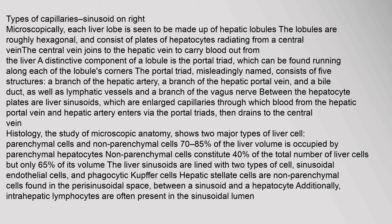Microscopically, each liver lobe is made up of hepatic lobules. The lobules are roughly hexagonal and consist of plates of hepatocytes radiating from a central vein, which joins the hepatic vein to carry blood out from the liver. A distinctive component of a lobule is the portal triad, found running along each of the lobule's corners. The portal triad consists of five structures: a branch of the hepatic artery, a branch of the hepatic portal vein, a bile duct, lymphatic vessels, and a branch of the vagus nerve.